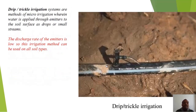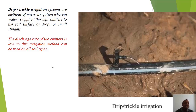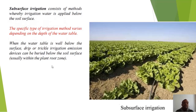The third method is drip irrigation or trickle irrigation. Drip irrigation is a method of micro-irrigation wherein water is applied through emitters to the soil surface in drops or small streams. Here we can save water and avoid wastage — only the amount of water required for the land is supplied. The discharge rate of emitters is low, so this method can be used on all soil types.